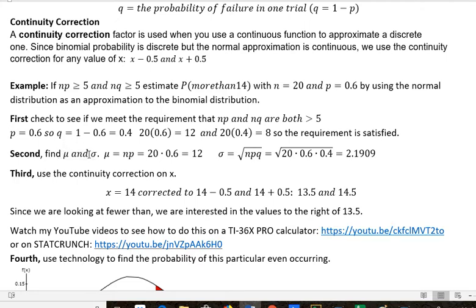Second, find μ and the standard deviation. μ is n times p, so 20 times 0.6, which is 12. That's the mean we're using. And the standard deviation is the square root of npq: 20 times 0.6 times 0.4, square root of that is about 2.1909.